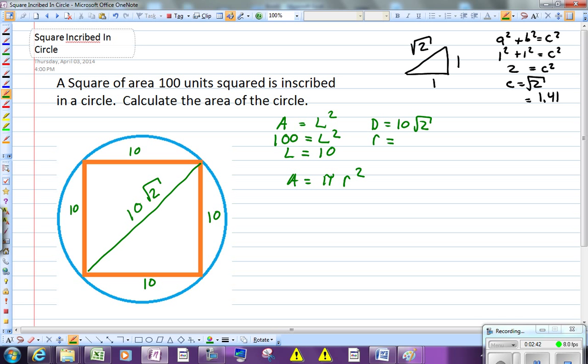That's 5 square root of 2, so that's pi times 5 square root of 2 squared.